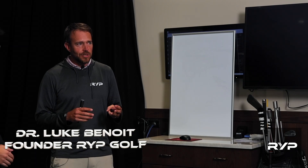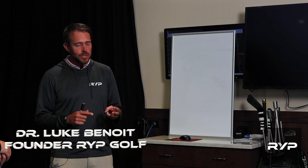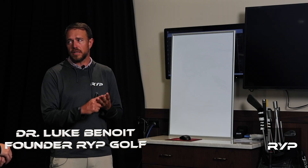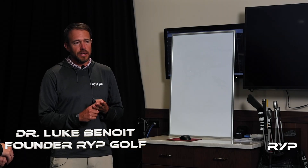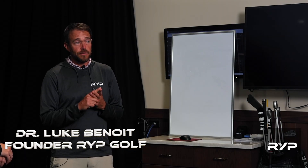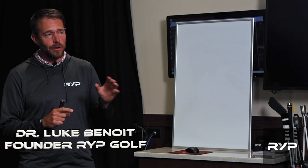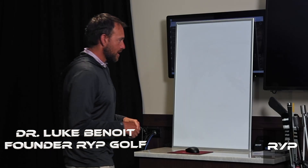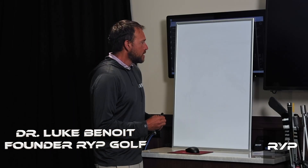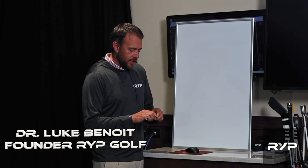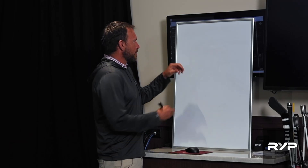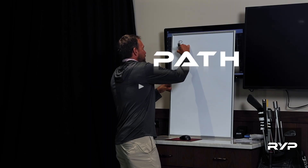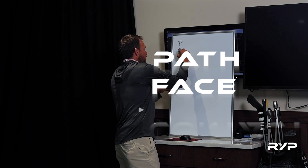What is very effective is understanding the rules of thumb of path, face, and contact, and understanding how to fix biases in those three areas. So I'm going to go to the whiteboard and we're going to talk about this. Here's the idea we're going to start with: we've got path, face, and contact.